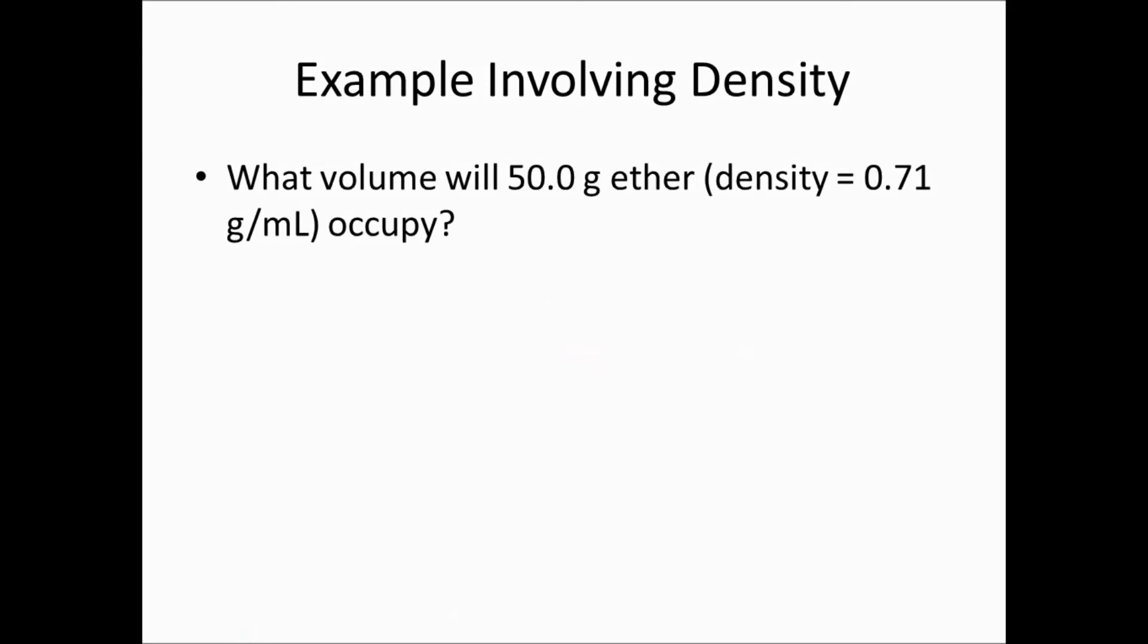One thing you've done before are problems involving density. We can use the definition of density and manipulate this in a way that makes us able to do it in terms of dimensional analysis. Here the volume is in milliliters and I have 50.0 grams of ether. I know that I want to get rid of grams, and density has units of grams per milliliters. So 0.71 grams at the bottom, one milliliter at the top. I get 7.0 times 10 to the 1 milliliter. This type of problem takes practice and I strongly urge you to do as much practice as possible involving these types of situations.